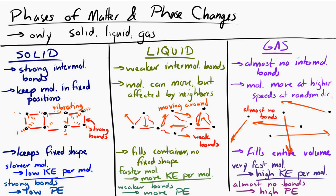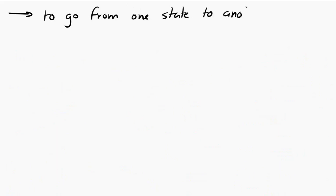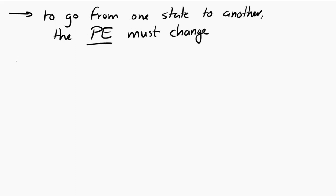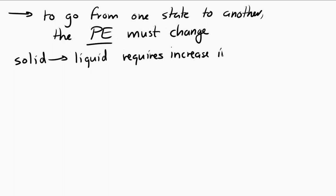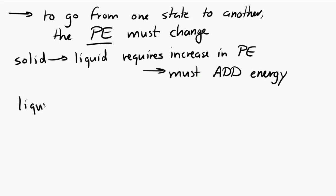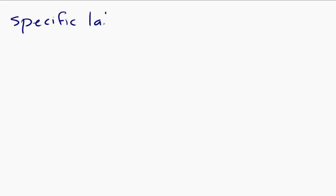What that means is that to go from one state to another — say from solid to liquid — you're changing the potential energy. You have to increase the potential energy to go from solid to liquid, and also from liquid to gas. Another way to say that is that you have to add energy for each of those transitions. That's where specific latent heat comes in. Specific latent heat is the energy necessary to change the phase of one kilogram of substance.